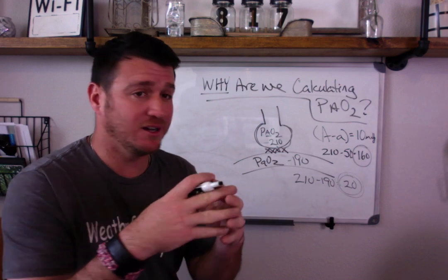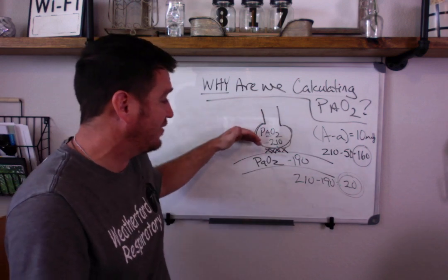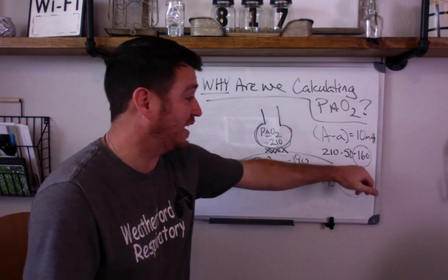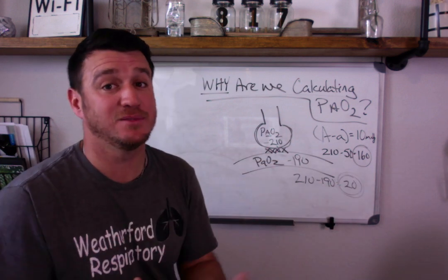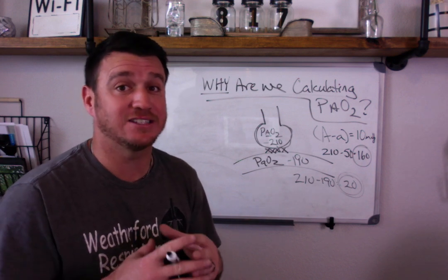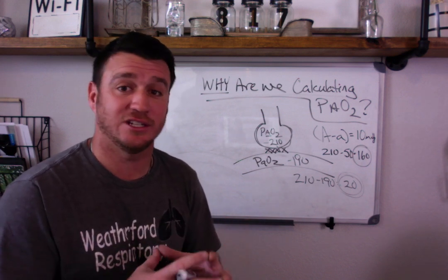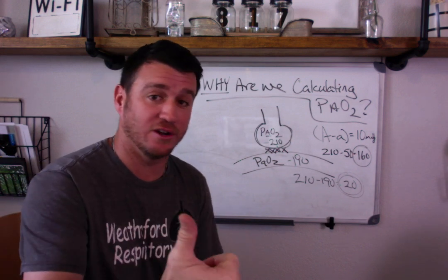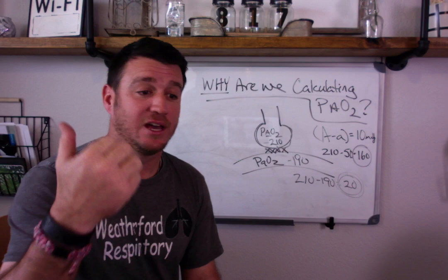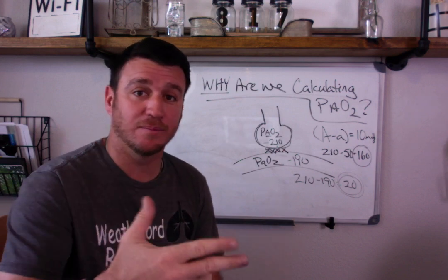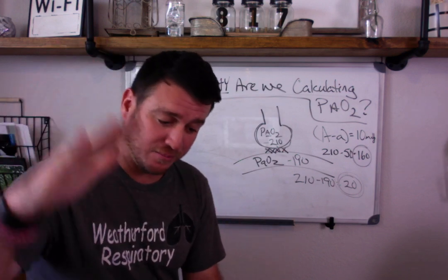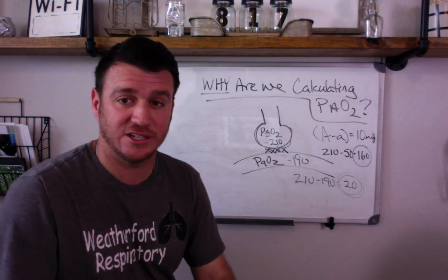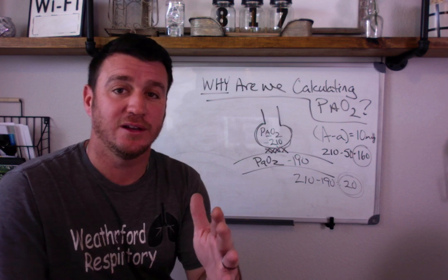Most of the oxygen that is coming into the alveoli is crossing into arterial blood. But when you have a big gradient then it becomes even more significant and it's all an indication of an oxygenation problem. Most of the time it ties back to a shunt of some sort. Either a pneumonia, an atelectasis, pulmonary edema,